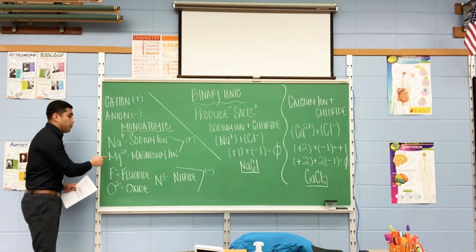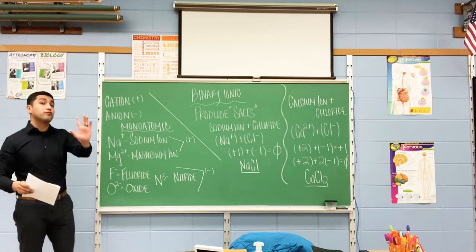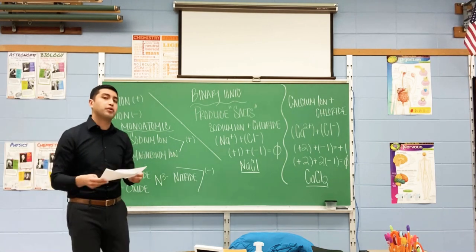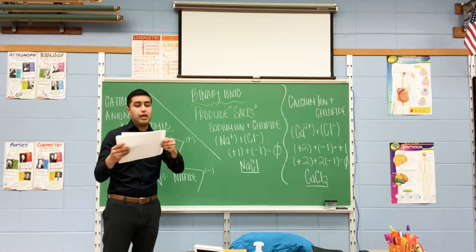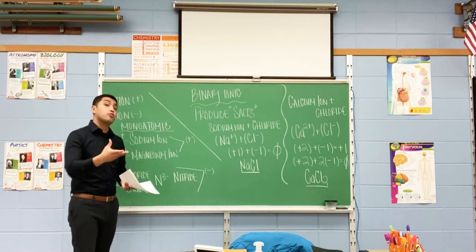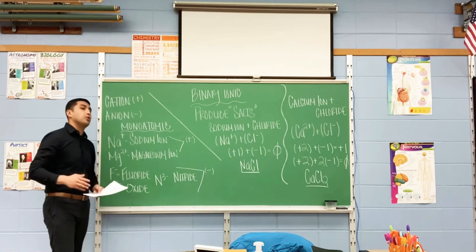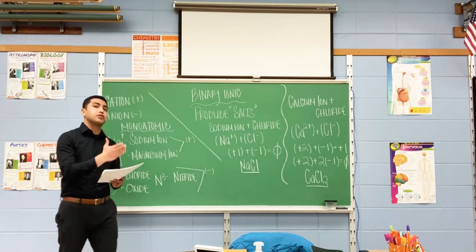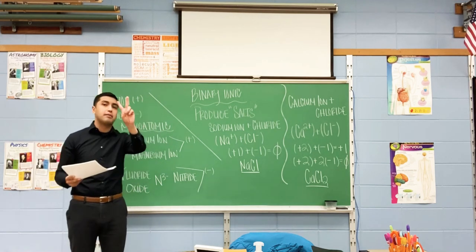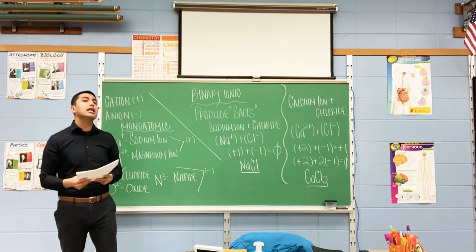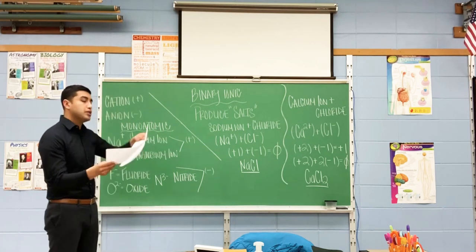Let's look at the second example. Mg, which is magnesium. The first step is to locate it on your periodic table. Magnesium is element number 12, right after sodium. It's element number 12, but you'll notice it's in a different column. You look at the top — there's a two at the top. The column is number two.